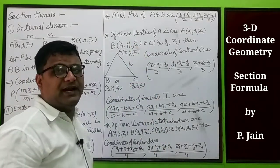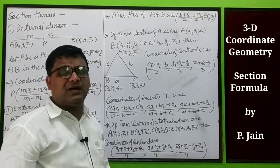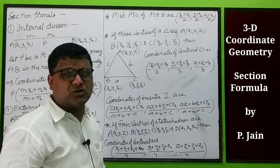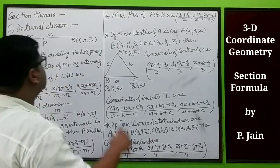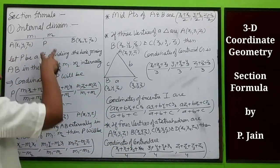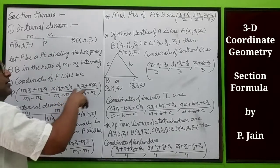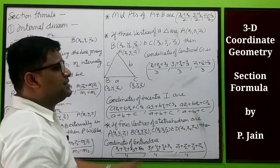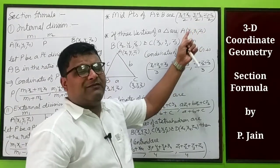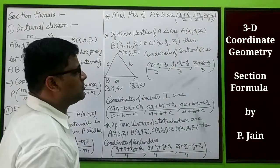After this comes the midpoint of A and B. If you want to calculate the midpoint, the ratio must be 1 is to 1, meaning m1 to m2 is 1 to 1. Putting this in the internal division formula, the midpoint is ((x1+x2)/2, (y1+y2)/2, (z1+z2)/2).